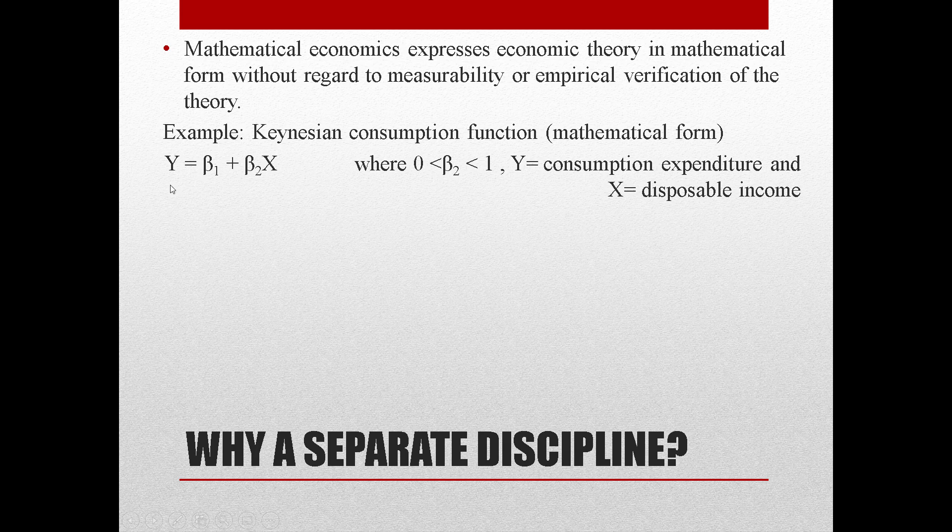Y is consumption expenditure, β₁ is autonomous consumption, β₂ is marginal propensity to consume, and X is disposable income—that is, income after tax. So with the help of this mathematical equation, we come to know that there exists a linear, positive, and exact relationship between consumption expenditure and disposable income.